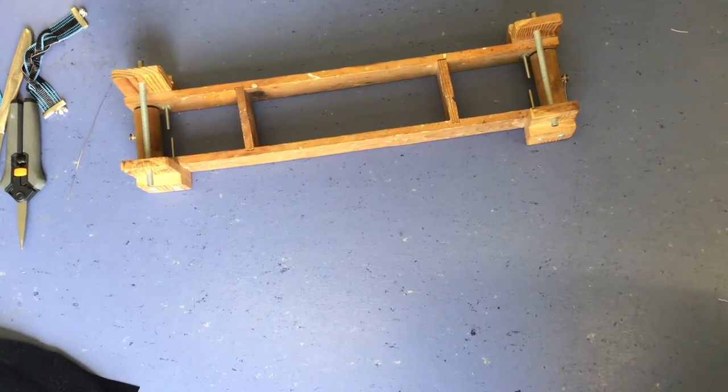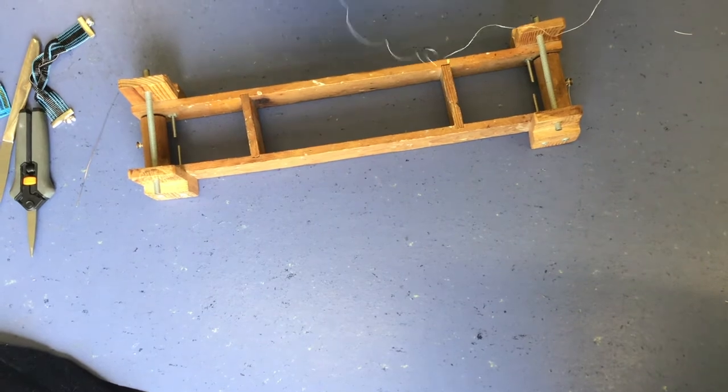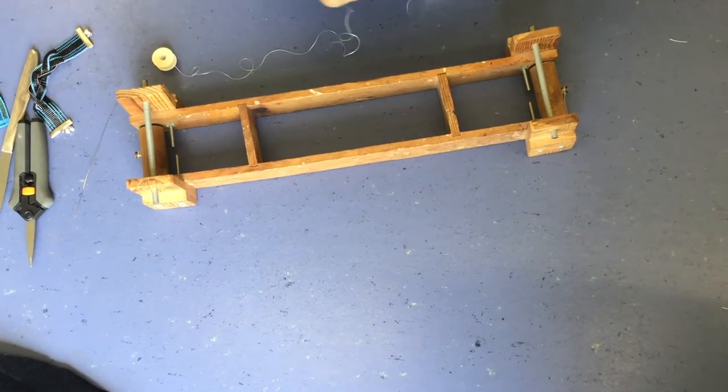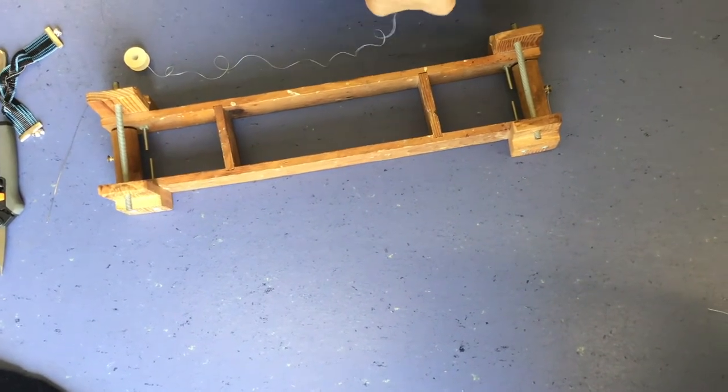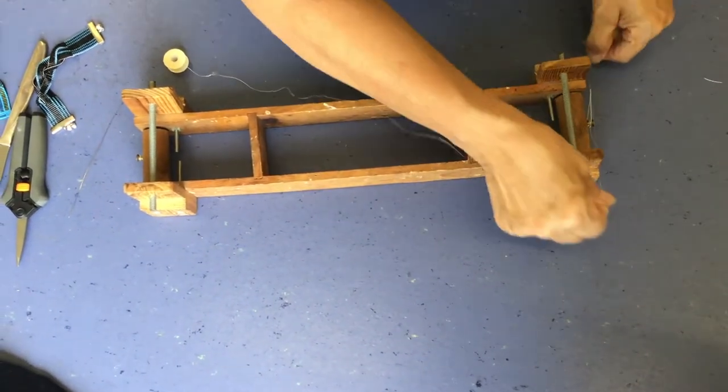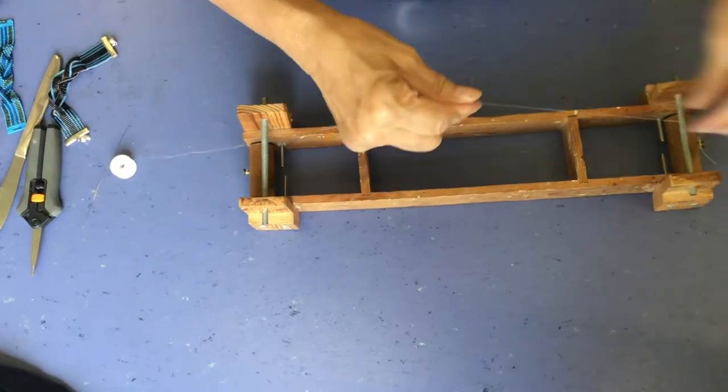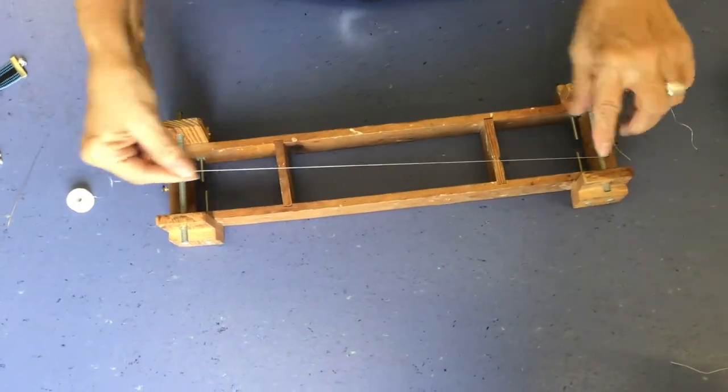Okay, the first thing we're going to do is to thread our warp threads. So you take your entire thread, the whole spool. Do a slip knot on one end. That's a slip knot. Put it over the post on the end. Pull it tight. So all we're going to do is go from post to post, one space apart.